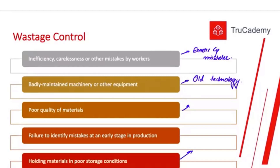Fifth, holding materials in poor storage conditions: this is a major reason for wastage. For example, if iron is a raw material and you keep it in open air, it will rust much more quickly compared to keeping it in a secure place with less moisture. Good holding conditions lead to less wastage. Some raw materials are very sensitive and may require air conditioning — if proper temperature levels through heating or cooling are not maintained, wastage will also increase.